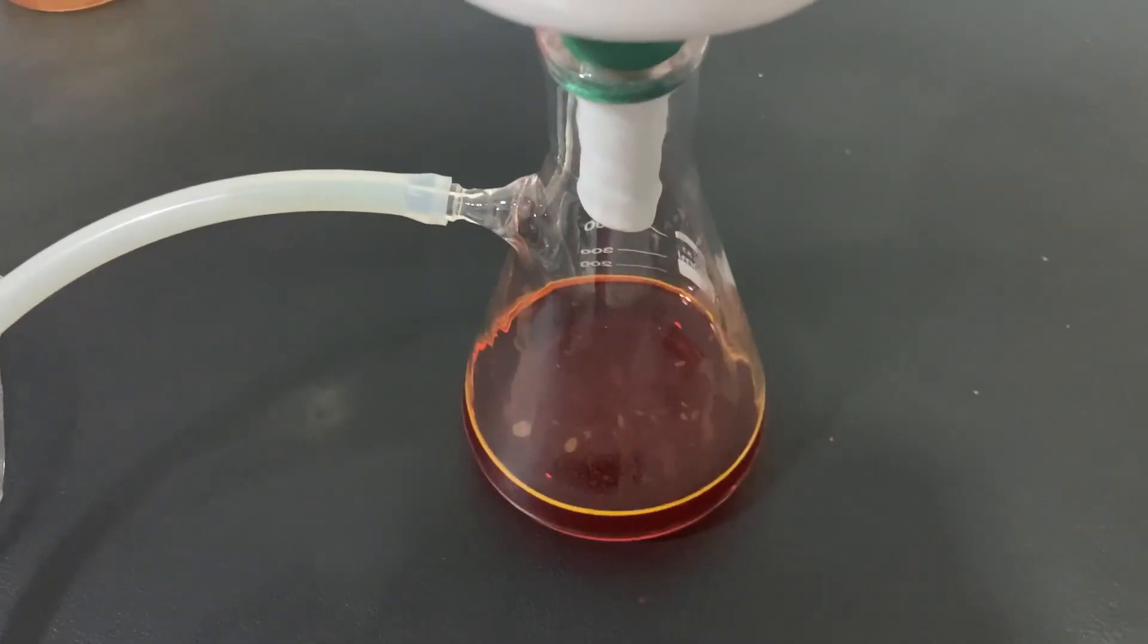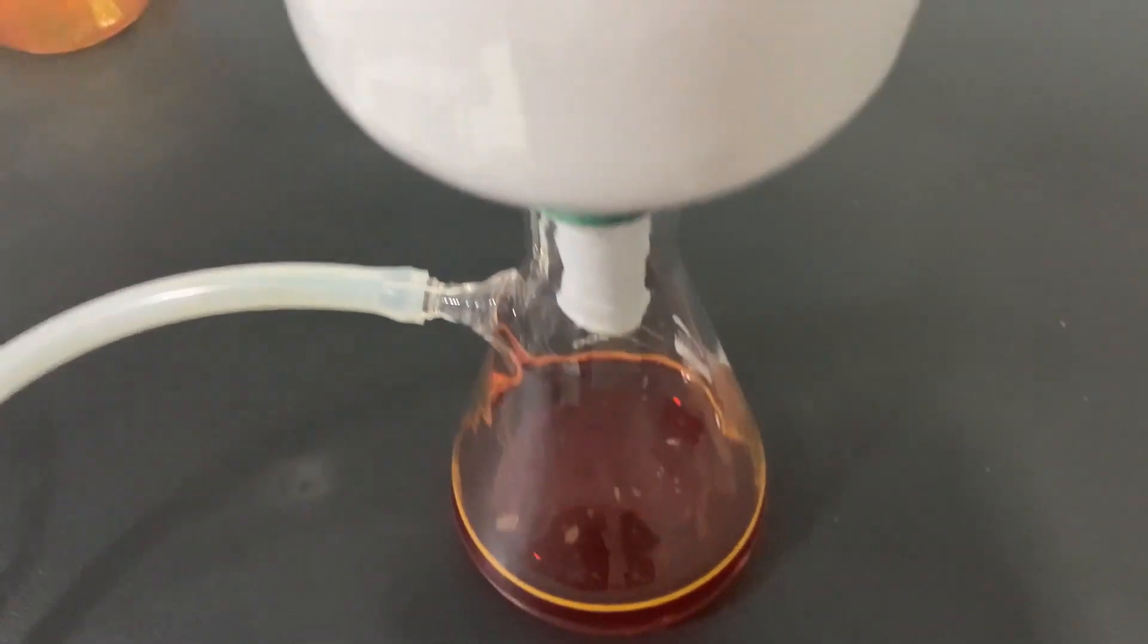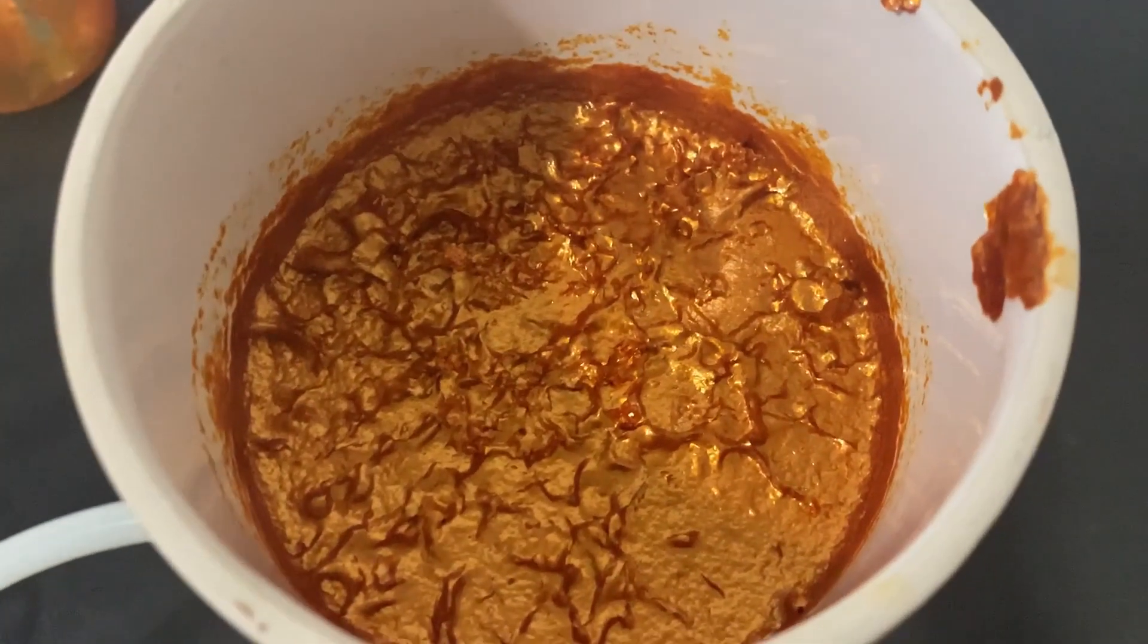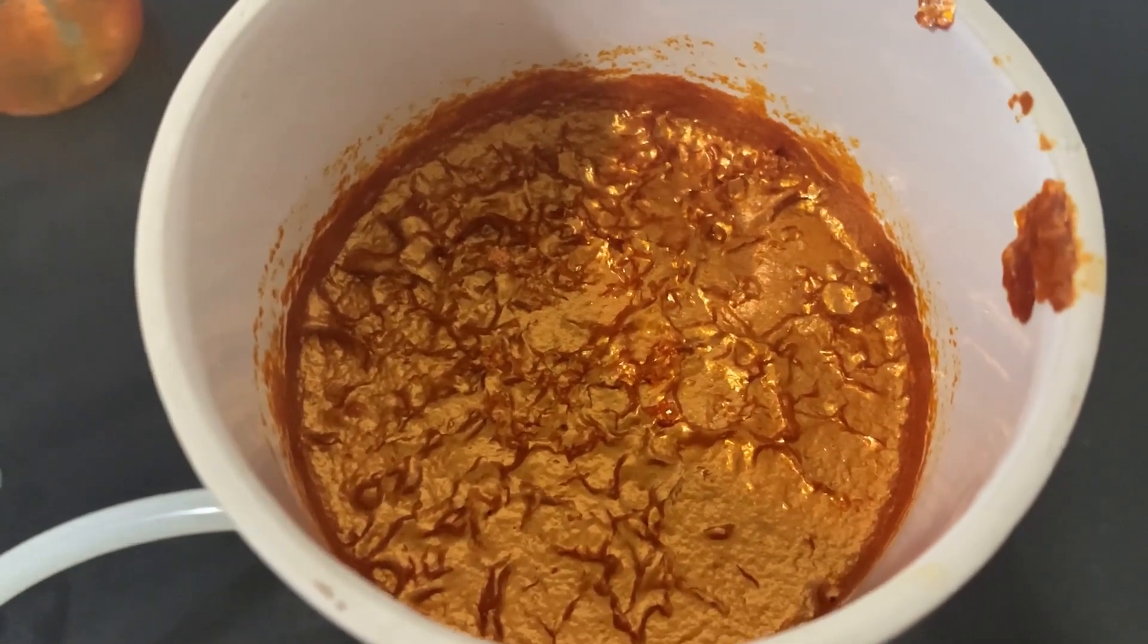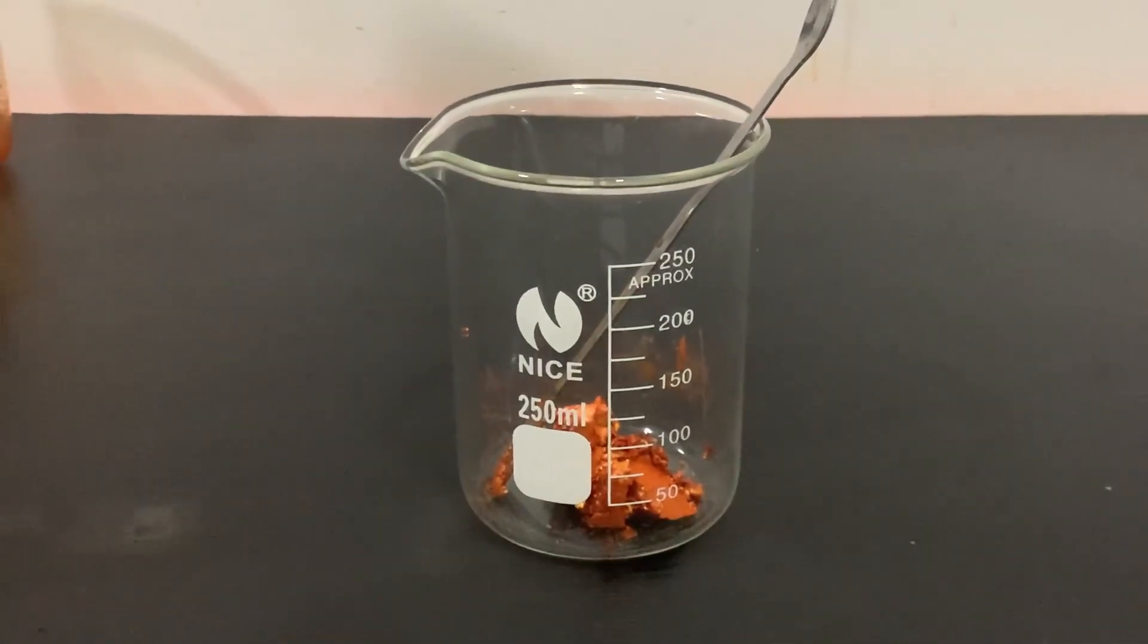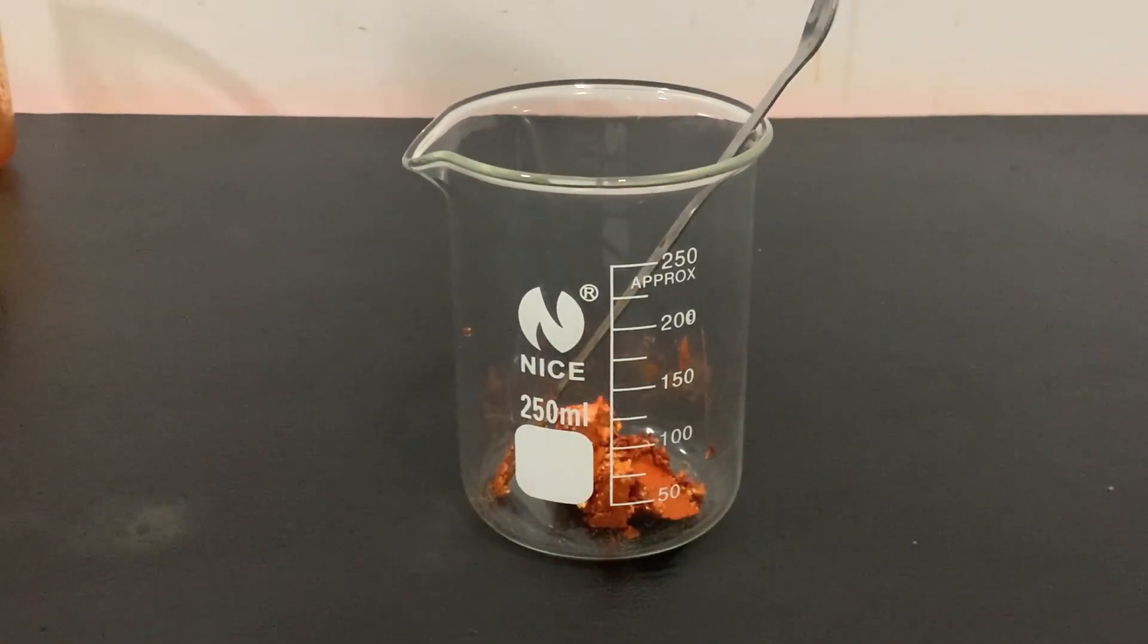Another vacuum filtration is done to separate the pure methyl orange. I transferred all of the wet methyl orange to a beaker and dried it in the oven for a few hours.